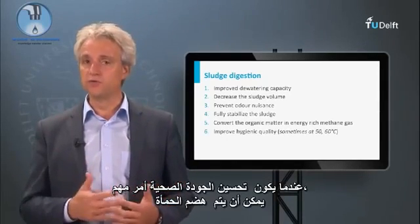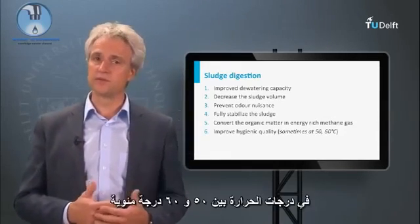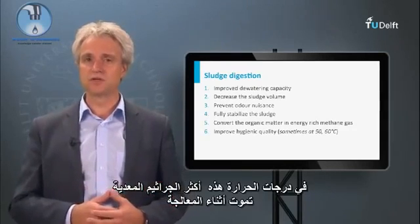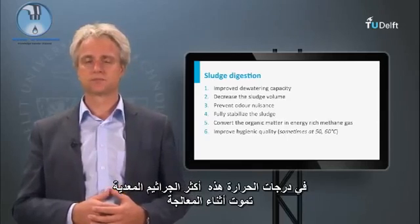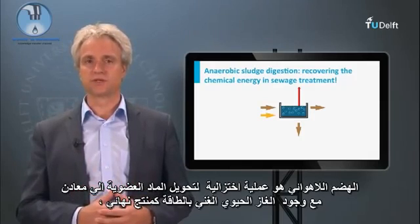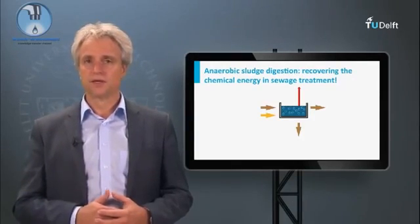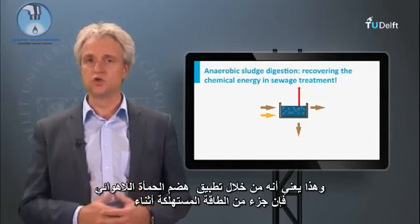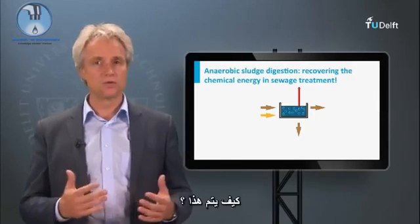When hygienic quality improvement is important, sludge digestion can be performed at temperatures between 50 and 60 degrees Celsius, at which most infectious germs are killed off during treatment. Anaerobic digestion is a reductive mineralization process with energy-rich biogas as the end product, meaning that part of the energy consumed during sewage treatment can be recovered.